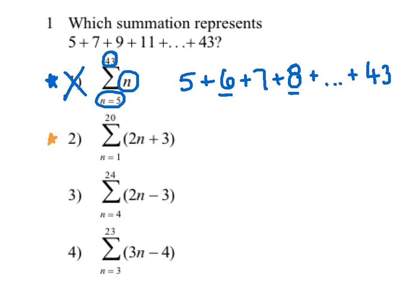Moving on to number two, I start with n equals one. Two times one plus three gives me five. The next substitution is n equals two: two times two plus three is seven. Then n equals three gives nine — looking good so far. Fast forwarding to the last term, substituting n equals 20: two times 20 is 40, plus three is 43. That matches perfectly.